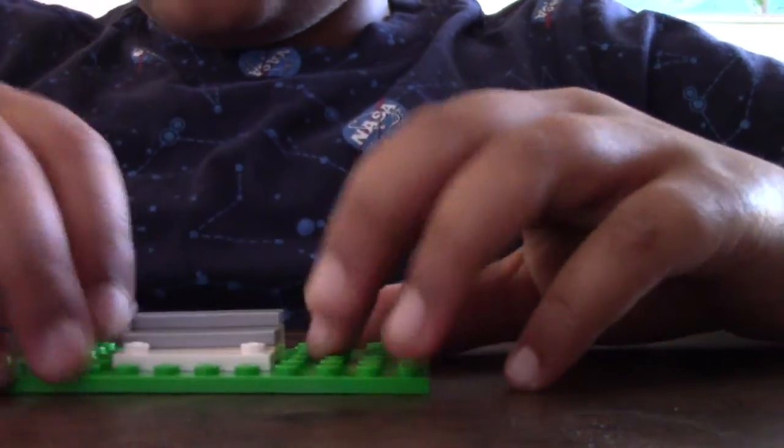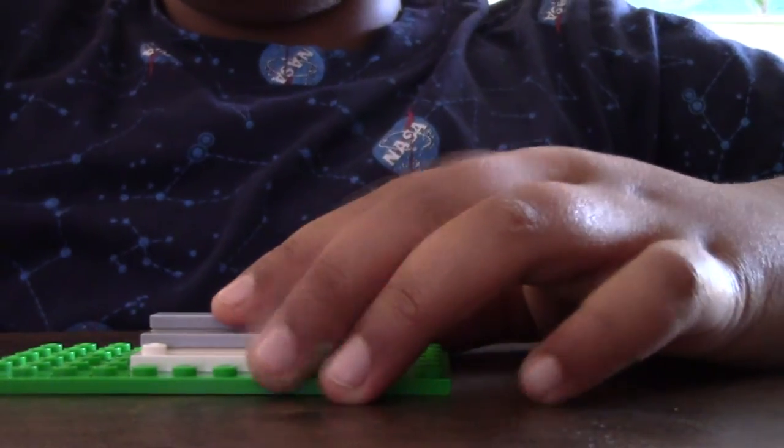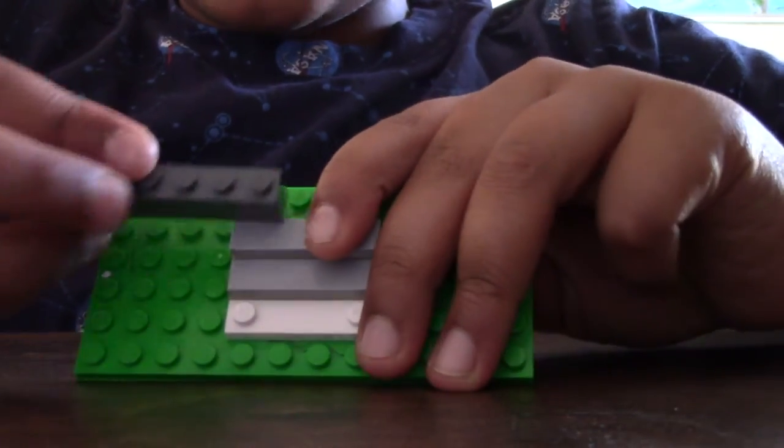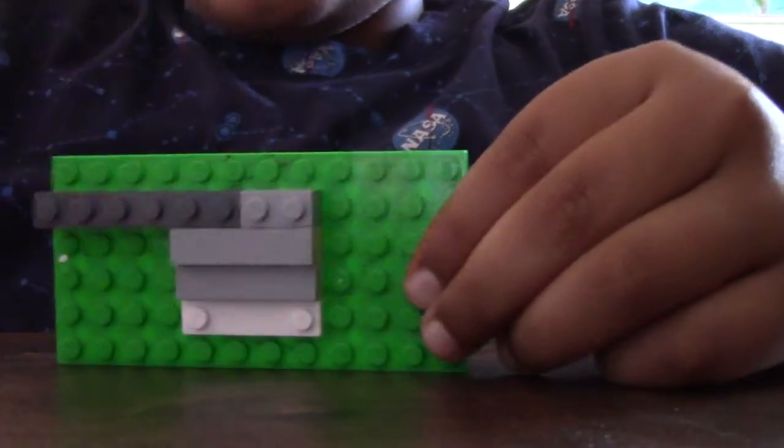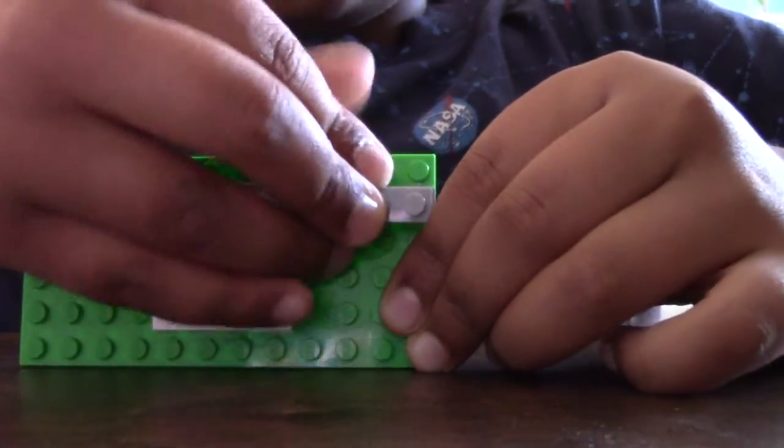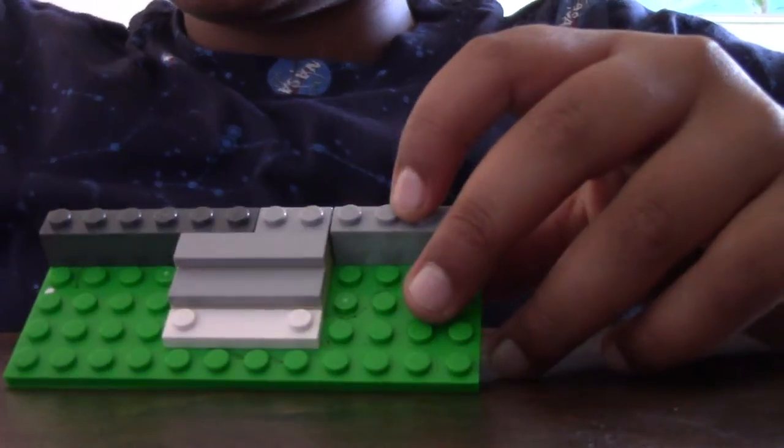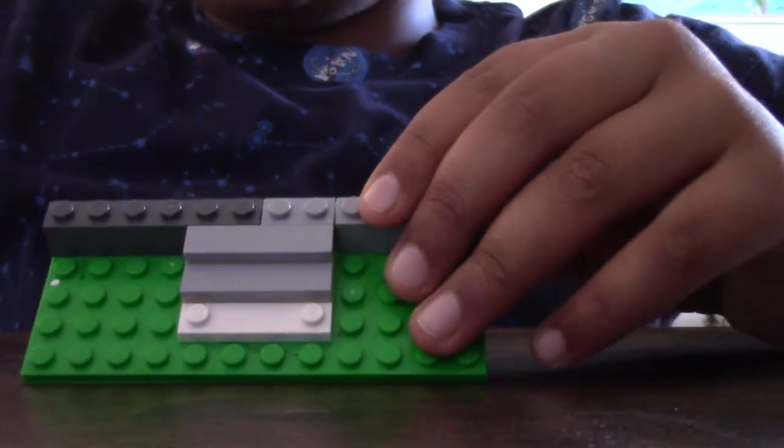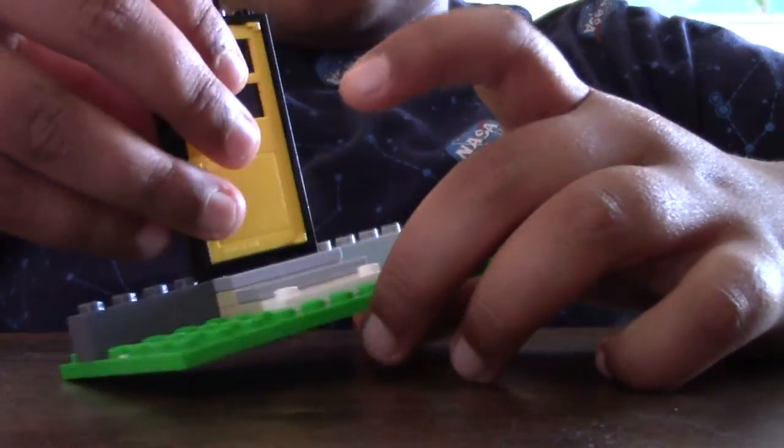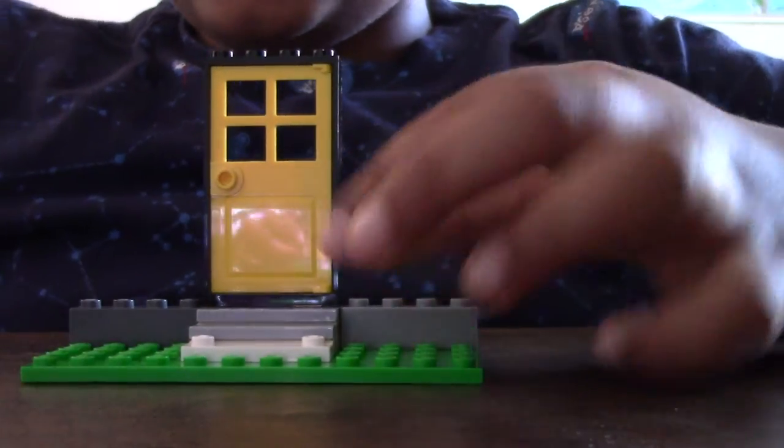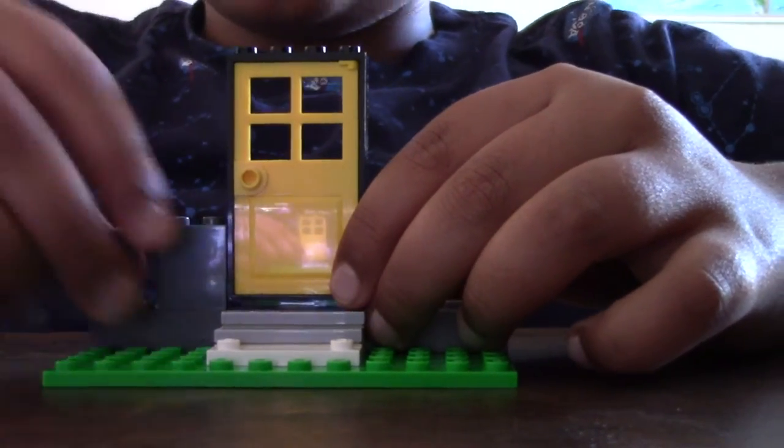Then I'm gonna use a 1x6 and a 1x2 and a 1x4 and a 1x4. And then I guess we can place the door now, so we can just build like that. So the door has now been placed.